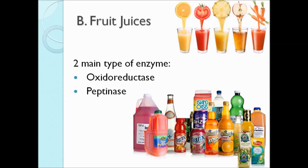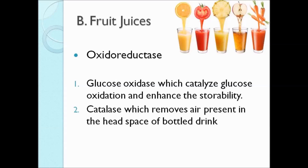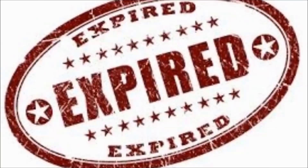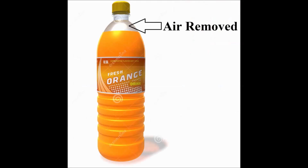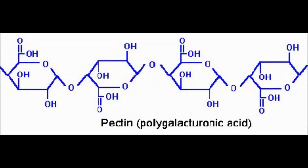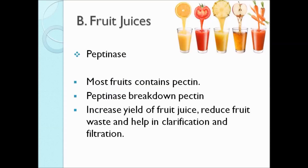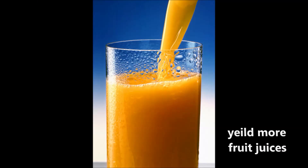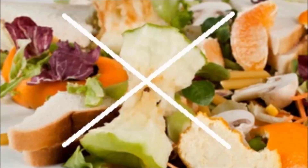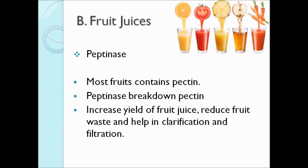There are two main types of enzymes used in the fruit juice and beverage industry: oxidoreductase and pectinase. Glucose oxidase can catalyze glucose oxidation and remove oxygen from food to enhance storability. Catalase is used to remove the air present in the headspace of the bottled drink. Nearly all fruits contain pectin; adding pectinase into fruits cleaves pectin, thus helping to yield more fruit juice, reduce fruit waste, and aid in clarification and filtration.